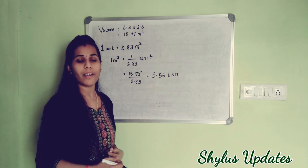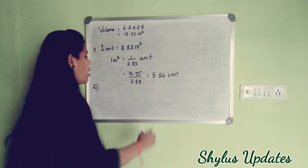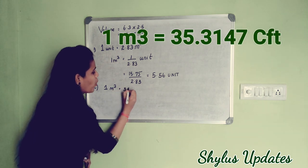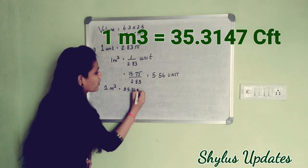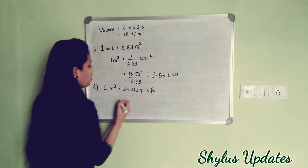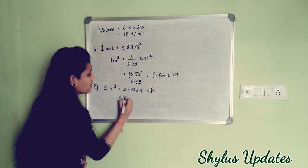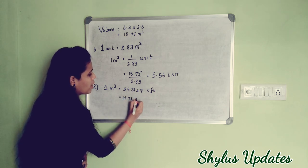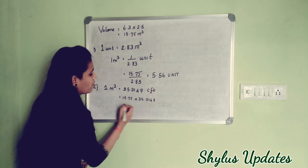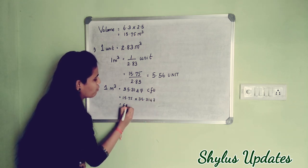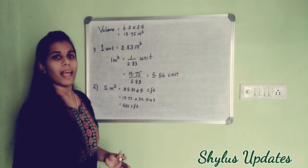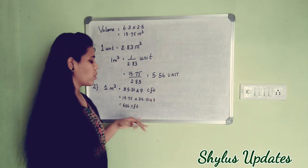Next, we have to convert cubic meters into cubic feet. 1 cubic meter equals 35.3147 cubic feet. So 15.75 cubic meters equals 15.75 multiplied by 35.3147. We get the answer 556 cubic feet. Now, we have the answer both in units and in cubic feet.